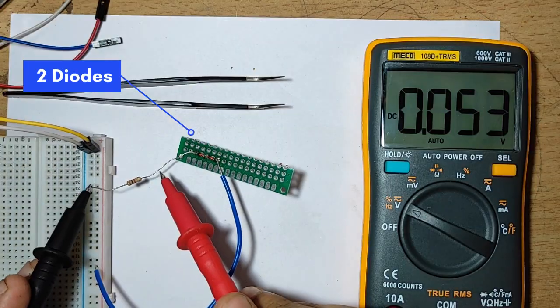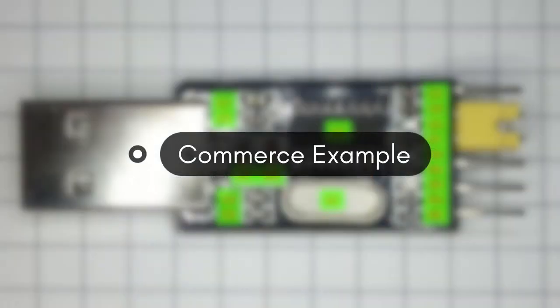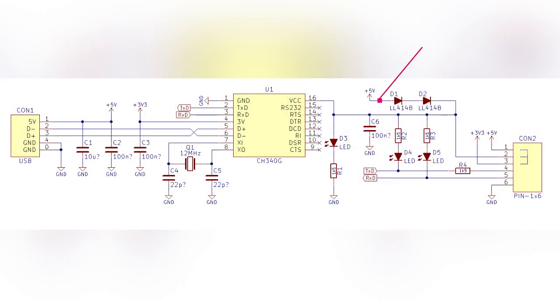The voltage is now 3.7 volts. A commercial example of this circuit is the USB to TTL converter, which uses this technique. Here we can see two diodes connected in series in the circuit diagram.